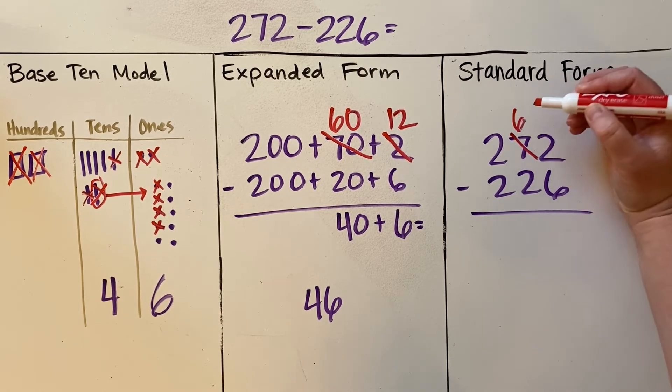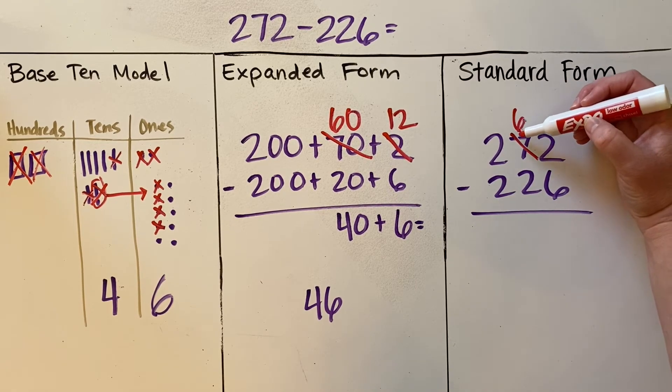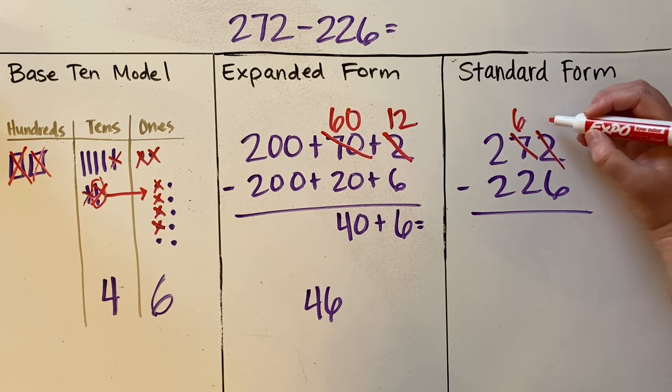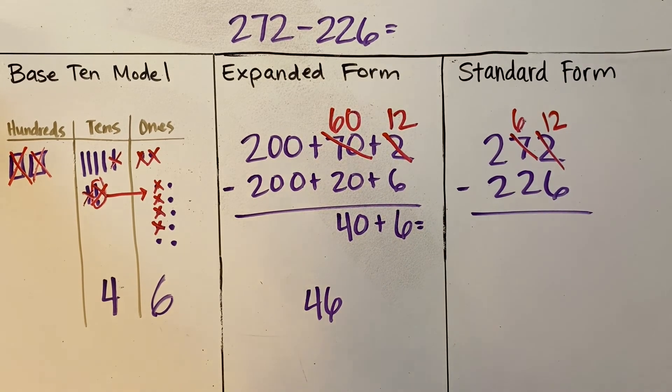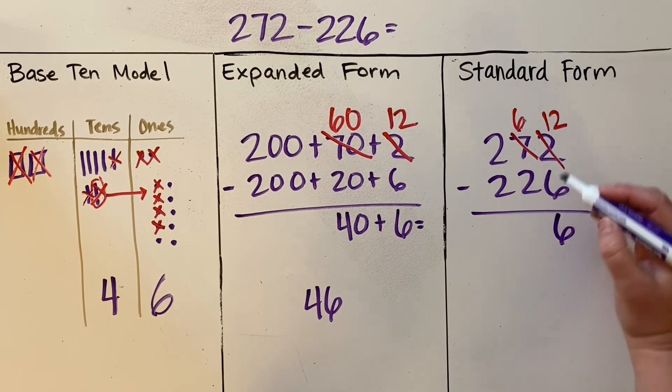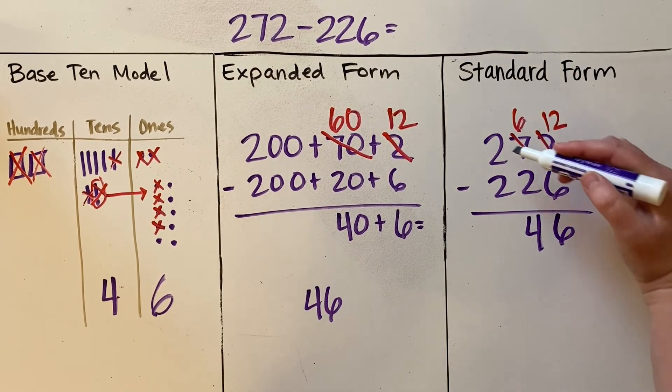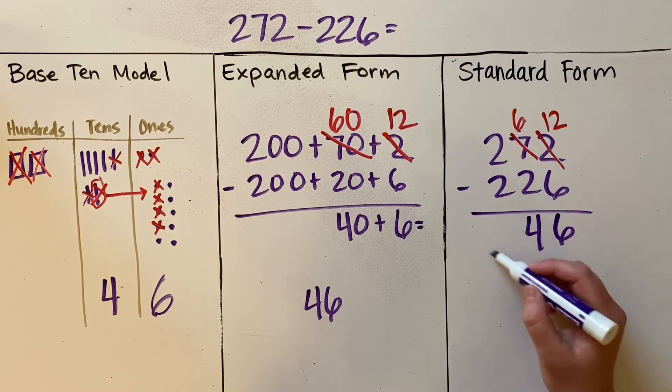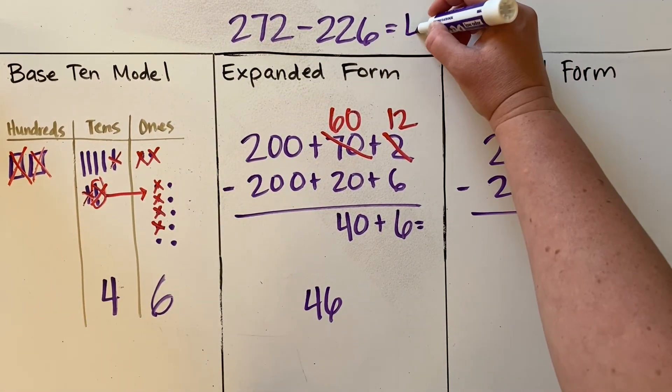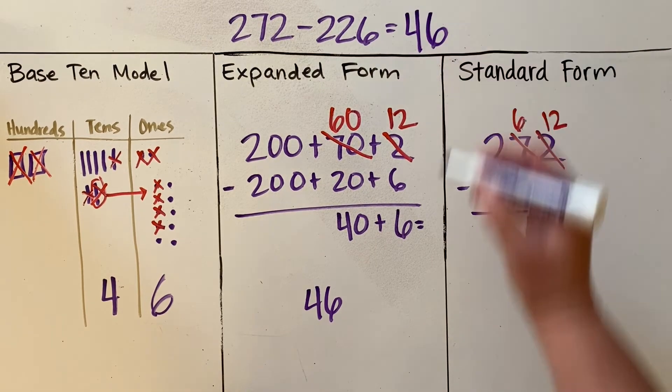So instead of two ones, I now have 12 ones. So 12 minus 6 is 6, 60 minus 20 is 40, 200 minus 200 is nothing, so 46. So 272 minus 226 is 46.